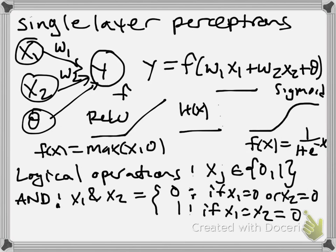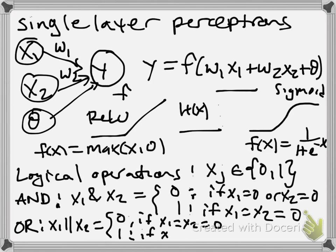And another of these logical operations is the OR. Sometimes it's represented by two vertical lines, and that is 0 if x1 and x2 are equal to 0, and it's equal to 1 if x1 equals 1 or x2 equals 1.